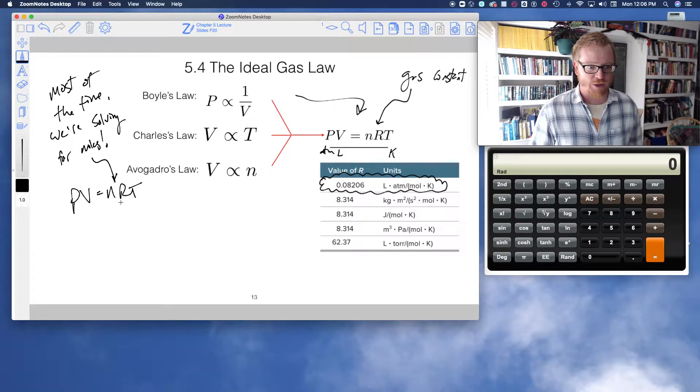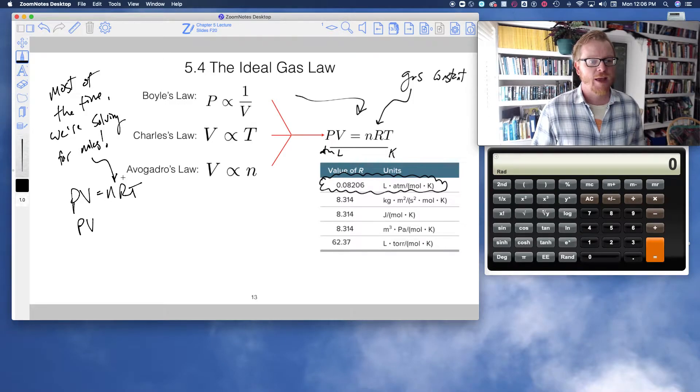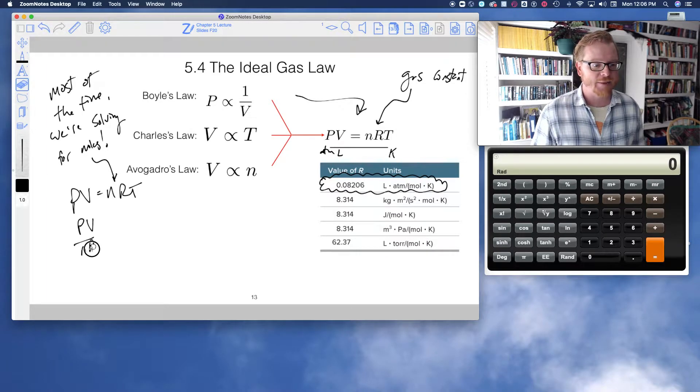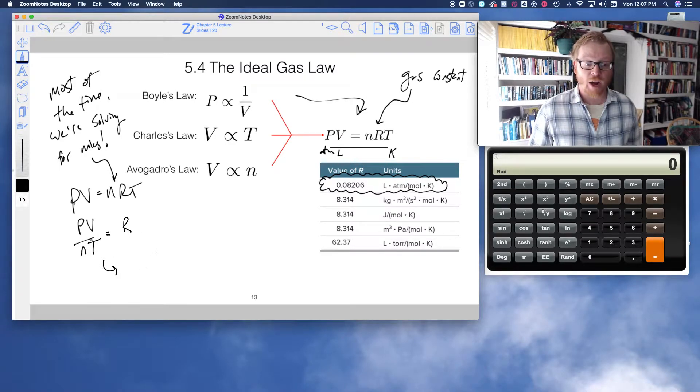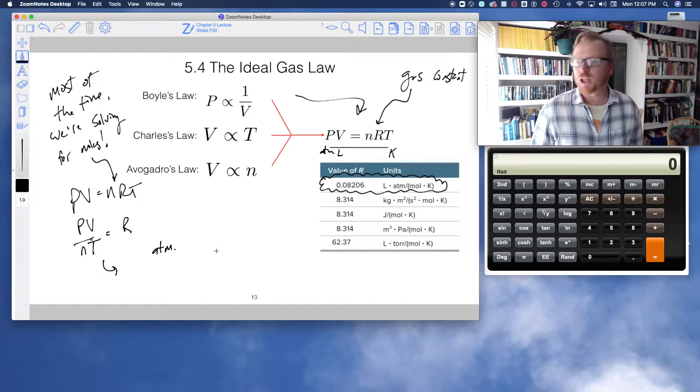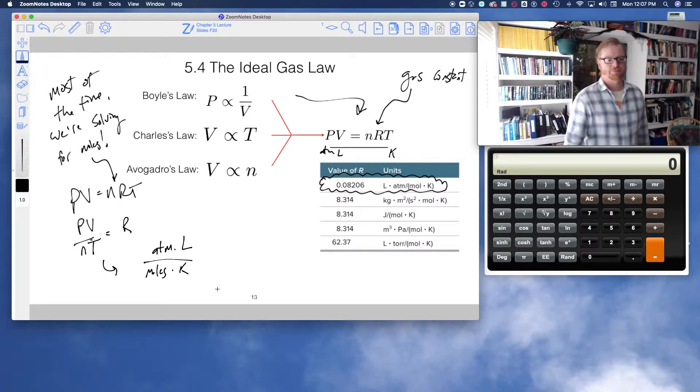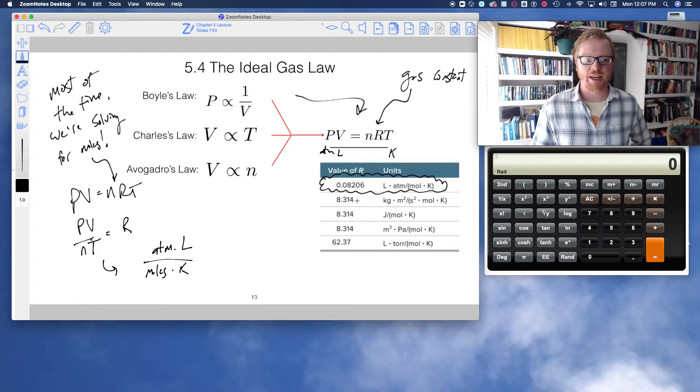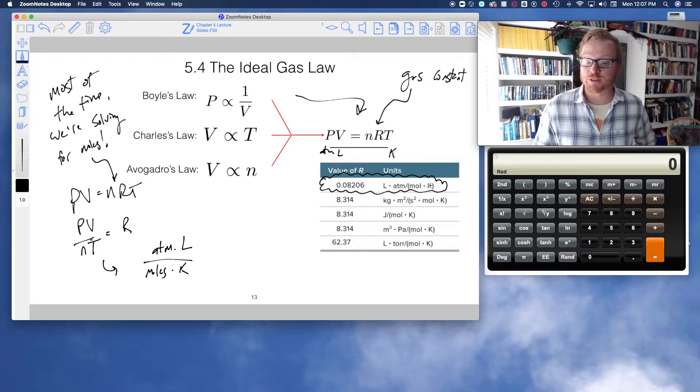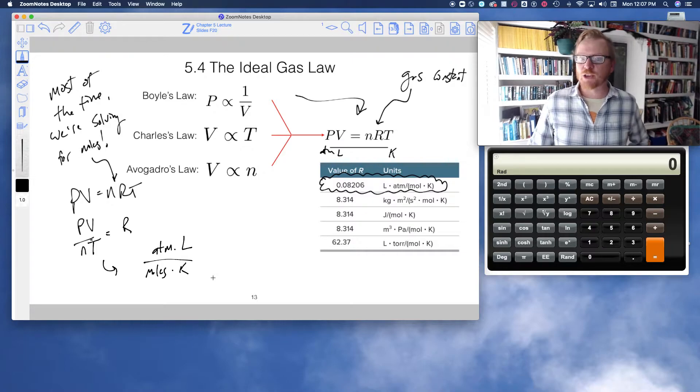And what I want to point out, as far as the units for this gas constant, I'm going to do a little bit of algebra here, and I'm going to divide both sides by Nt. And so when I do that, PV divided by Nt equals R. So then what about the units? Well, pressure, we're going to use atmospheres. Volume, we're going to use liters. N for moles, we're going to use moles, and temperature, we're going to use Kelvin. So look at the unit right here. This is why I circled this value, the 0.08206 liters times atmospheres divided by mole Kelvin. So that's where that unit comes from.